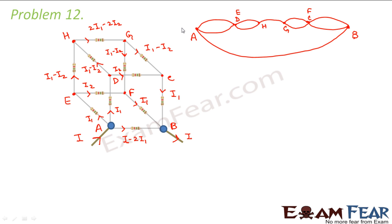Let us check if we have completed everything by counting the lines. We have just 10 lines, so we have missed two arms. The two missing arms are: D is also connected to C, and E is also connected to F. Adding these two connections, we have now completed our simpler circuit, where everywhere we have one resistor, each of resistance R.